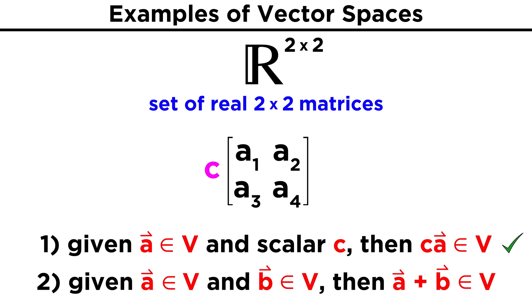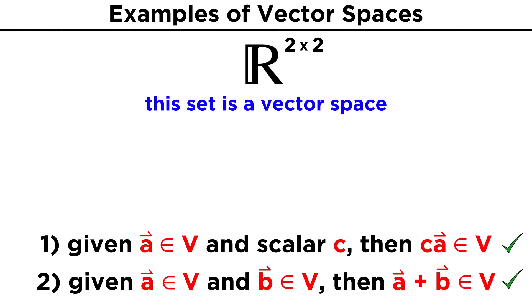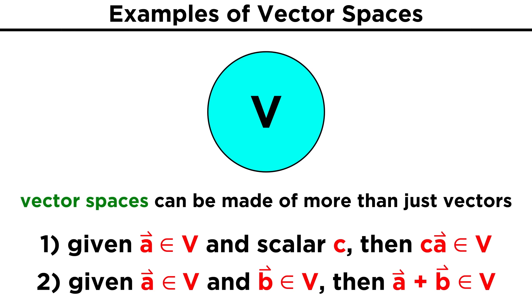Given what we know about matrix addition, if some set is comprised of matrices with the same dimensions, multiplying by some scalar, or adding any two matrices together will not change their dimensions, which makes this too a vector space.